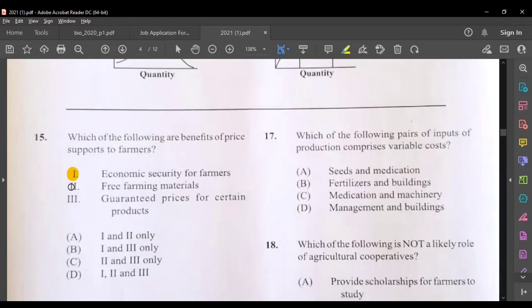Three, farming materials, not necessarily. And three, guaranteed prices for certain products. So I think the most suitable answer for question fifteen would be B.